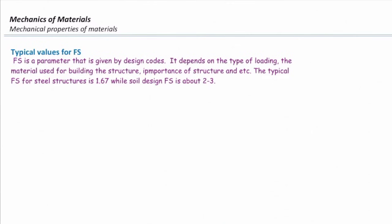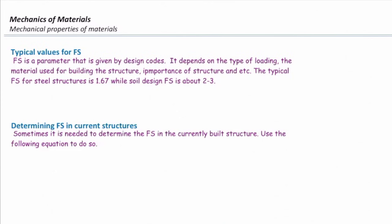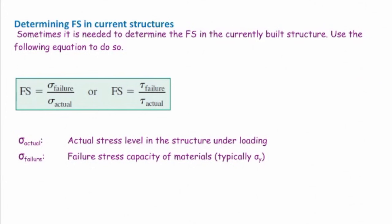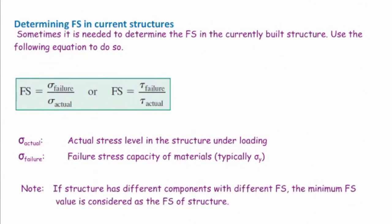But sometimes we need to determine the factor of safety in the currently built building. In that case, we can use this equation. Factor of safety in the currently built structure is sigma failure divided by sigma actual, or tau failure divided by tau actual. The actual stress, the sigma actual, is the actual stress in the current structure which is under loading. And the sigma failure is the maximum stress that the material fails at that point, which is typically sigma y or sigma u.